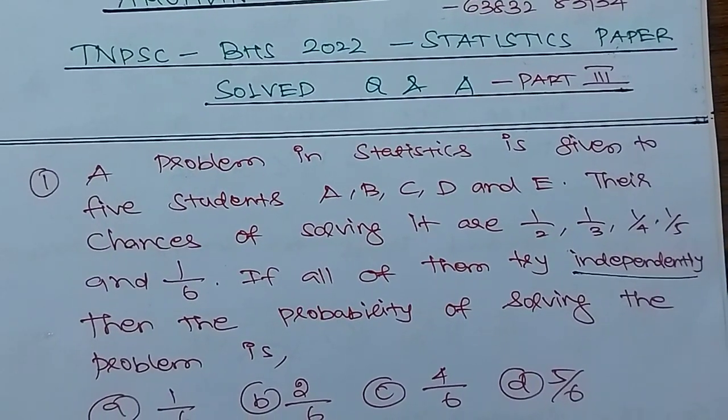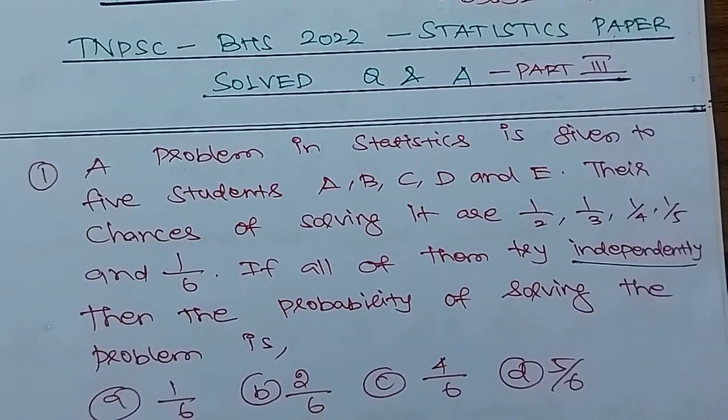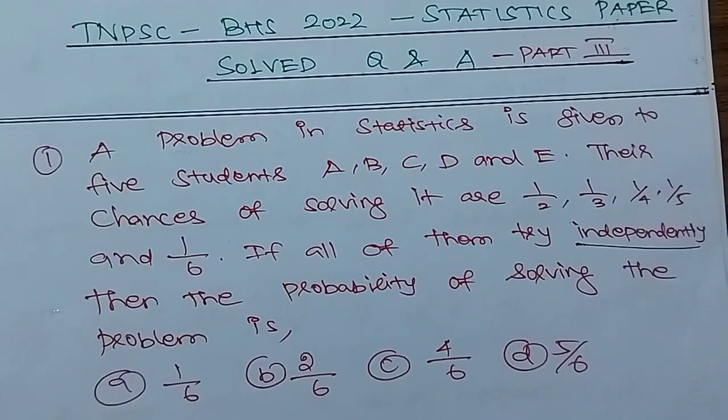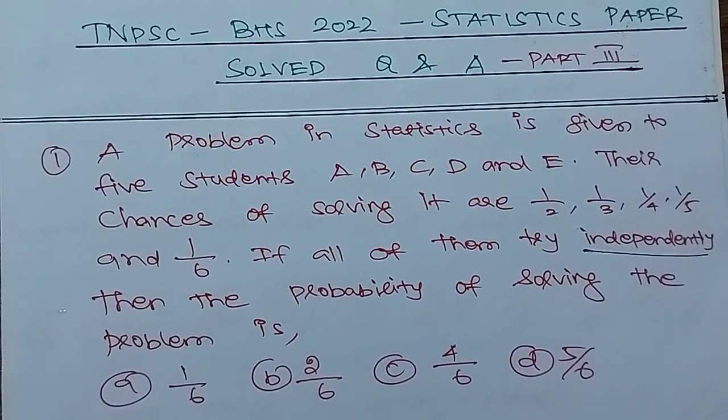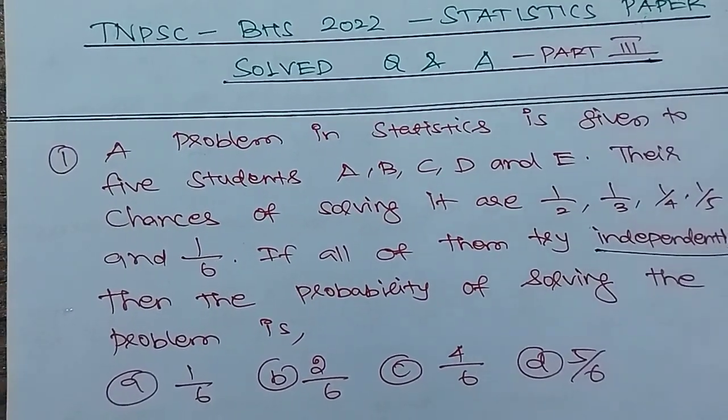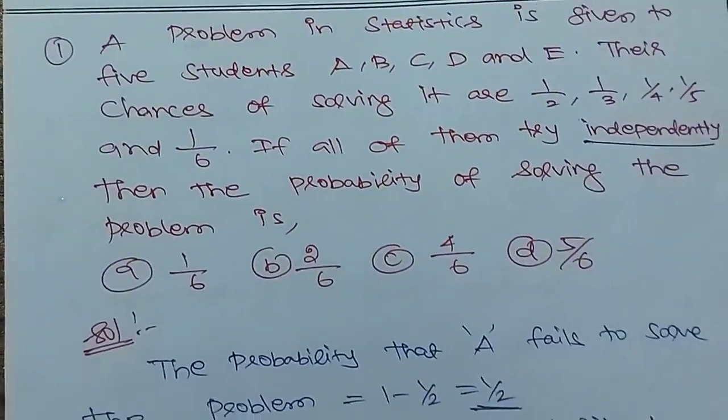Option A: 1/6, Option B: 2/6, Option C: 4/6, Option D: 5/6.